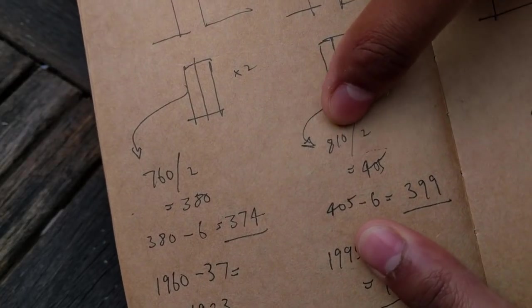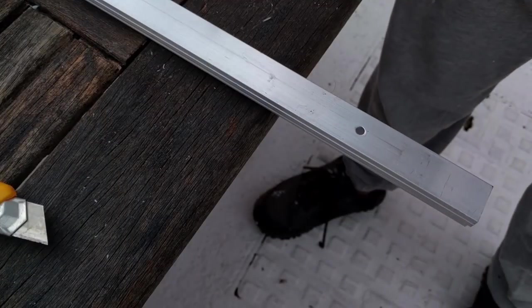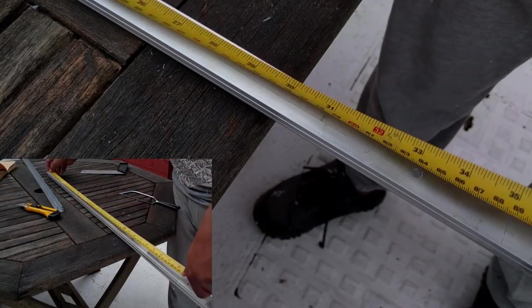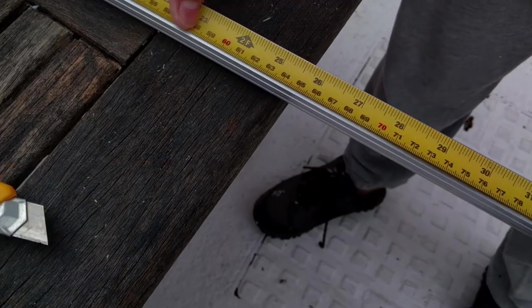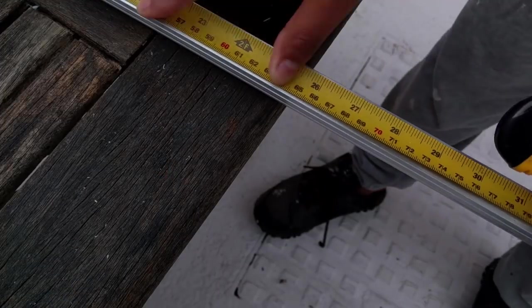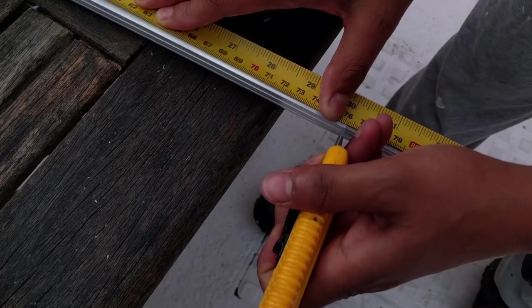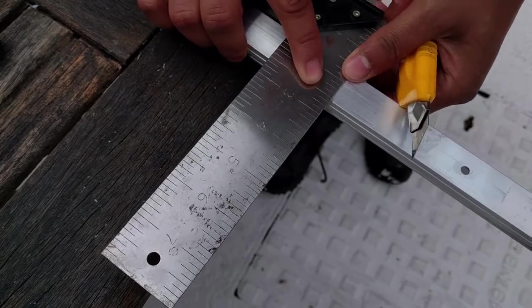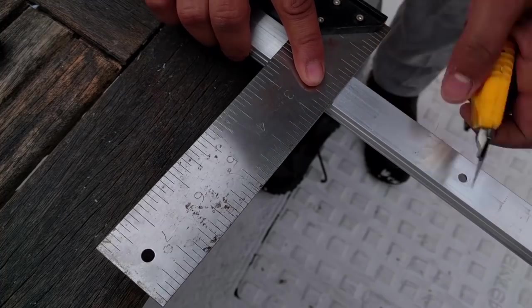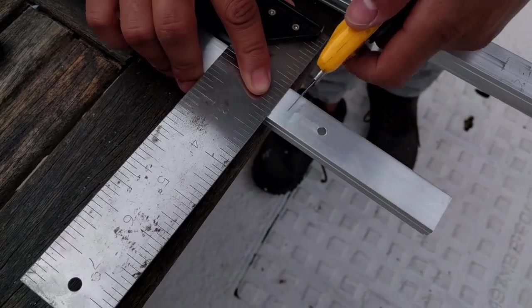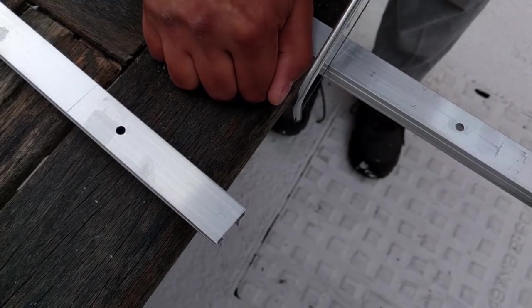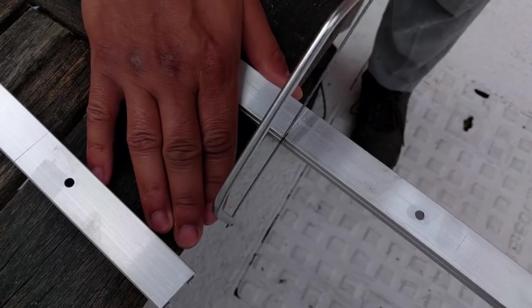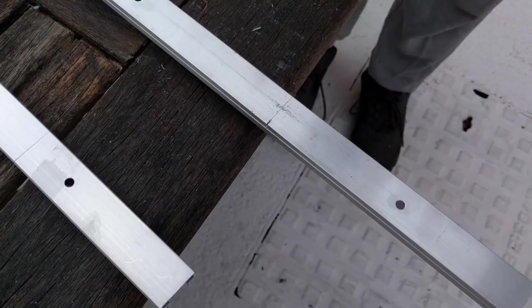I started by cutting the rails to size using a hacksaw. It would have been much easier if I had been able to hold it in a vise.